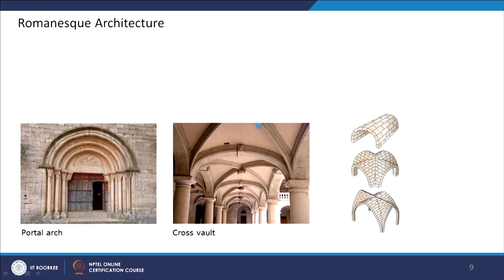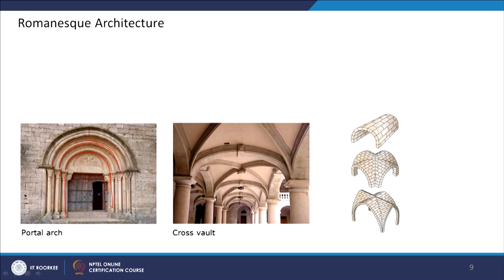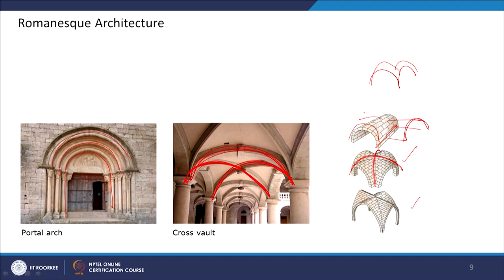Romanesque architecture features a series of portaled arches and introduced the cross vault. In Byzantine we saw the pendentive vault; here we see the cross vault — where two diagonal arches join to become a cross vault, also called a groined vault or rib vault. Earlier there was a single vault, and making cross arches provided a provision for the crossed vault. After this, churches and cathedrals featured cross-vaulted structures.